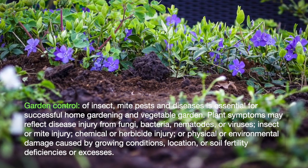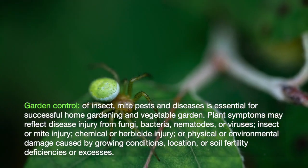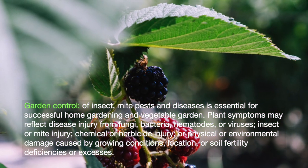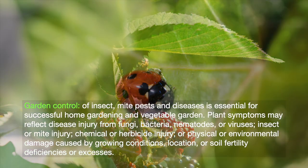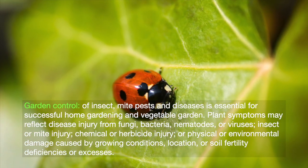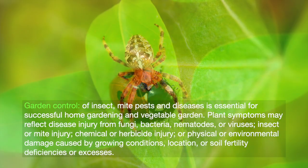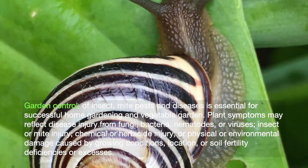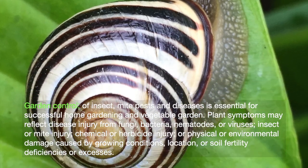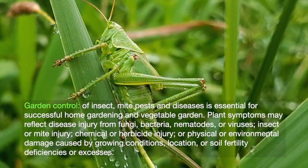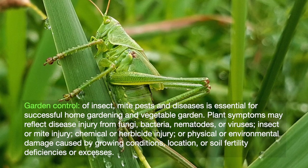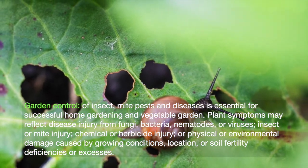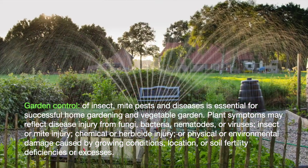Control of insect, mite, pests and diseases is essential for successful home gardening and part of general management practices for your vegetable garden. Plant symptoms might reflect disease injury from fungi, bacteria, nematodes or viruses, insect or mite injury, chemical or herbicide injury, or physical or environmental damage caused by growing conditions, location or soil fertility deficiencies or excesses.